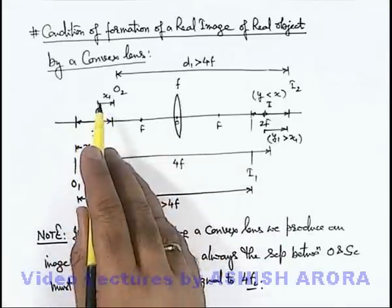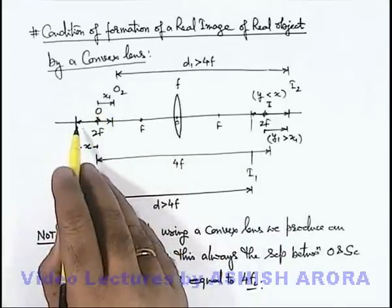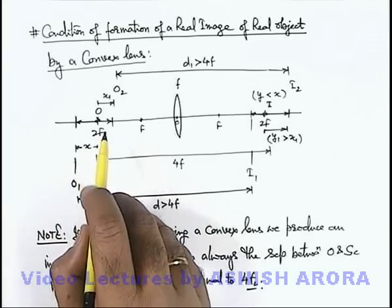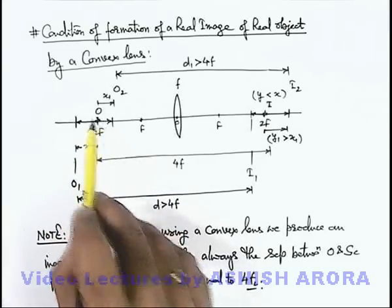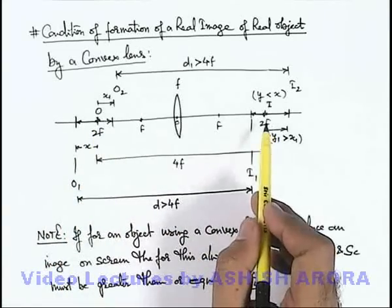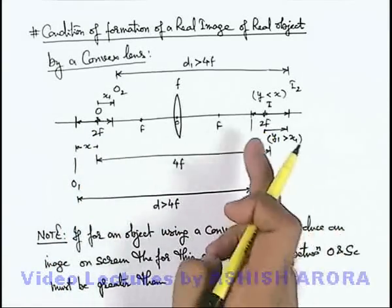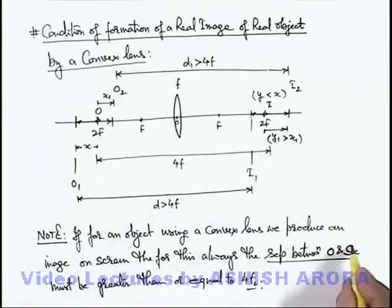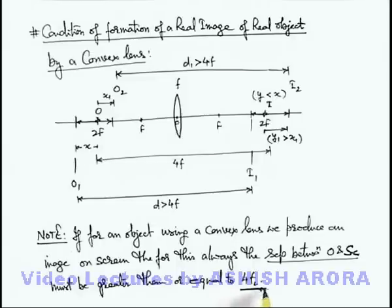So the object must be placed beyond the focal point, and in that situation, the separation between object and image — or if the image is obtained on a screen, the separation between object and screen — must always be greater than or equal to 4 times the focal length of the lens. This you must always keep in mind.